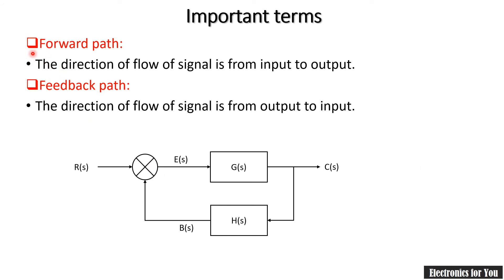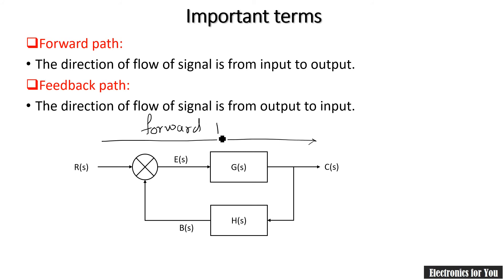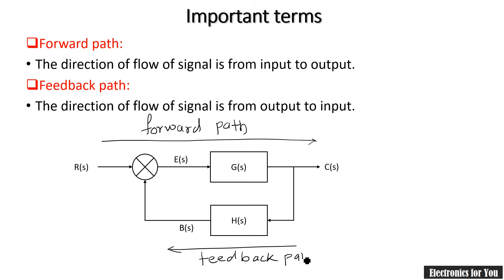The last important terms are forward path and feedback path. The name itself indicates the meaning: forward path is the direction of flow of signal from input to output. If we move from the input signal R(s) to the output signal C(s), then it is called as forward path. And if the signal moves in the direction from output to input, then such a path is called as feedback path. This is our feedback path in case of a closed loop system.